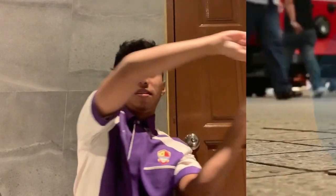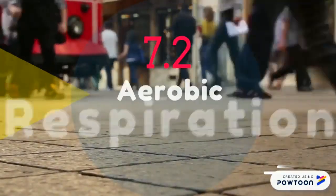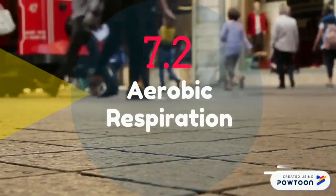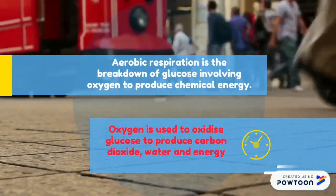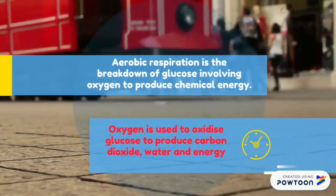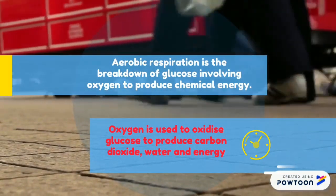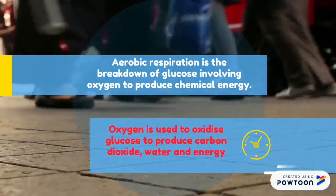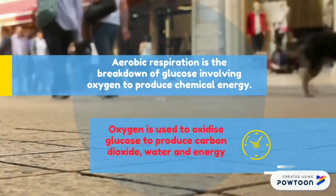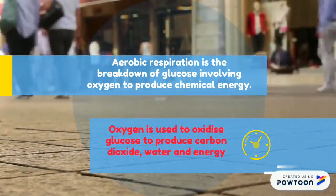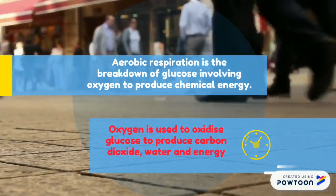Let's move to the next subtopic: 7.2 Aerobic Respiration. Aerobic respiration is the breakdown of glucose involving oxygen to produce chemical energy. Oxygen is used to oxidize glucose to produce carbon dioxide, water, and energy.